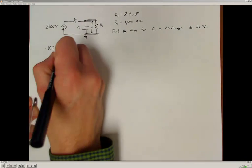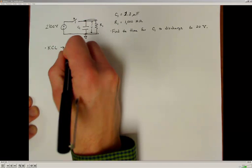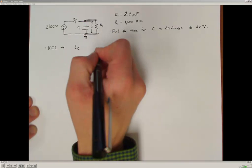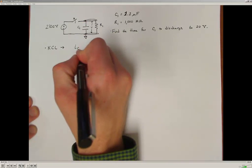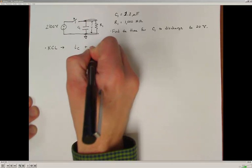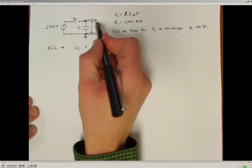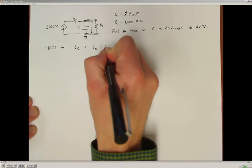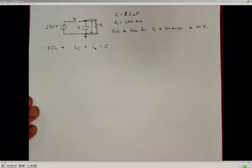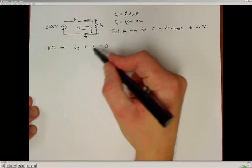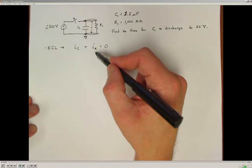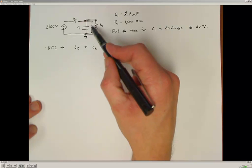Kirchhoff's current law at that node is going to tell us that we're going to have two paths for current to potentially go through the elements down to ground. We're going to have a current through the capacitor, and we're also going to have a current flowing from this top node through the resistor down to ground. Kirchhoff's current law says that all of those currents have to sum to zero. Now I'm going to apply the current-to-voltage relationships for the capacitor and the resistor to come up with my differential equation that's going to describe this voltage as a function of time.